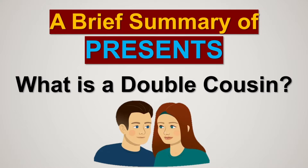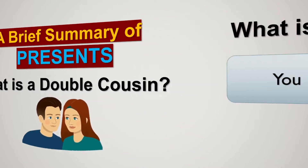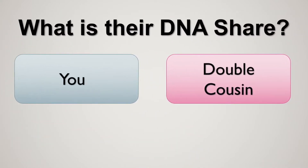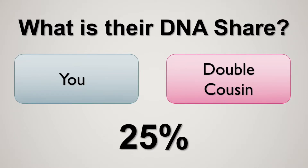Now let's move on to the question: what is their DNA share? Between you and a first cousin you'd share on average twelve and a half percent DNA, but between you and a double cousin you share twenty-five percent DNA on average.